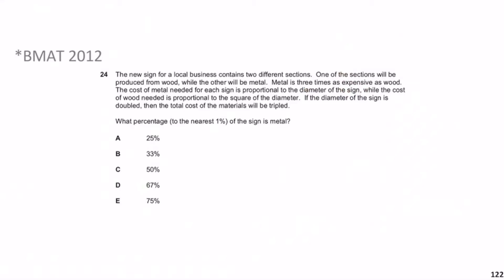The question says: a new sign for a local business contains two different sections — one produced from wood, the other from metal. Metal is three times as expensive as wood. The cost of metal needed is proportional to the diameter of the sign, while the cost of wood is proportional to the square of the diameter. If the diameter is doubled, the total cost of materials is tripled. What percentage of the sign is metal? Pause the video, give yourself a minute.